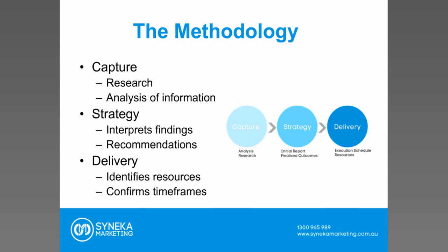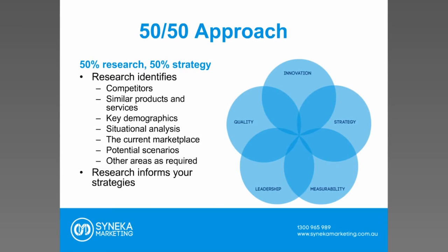Collaboration is particularly important here. A marketing plan will often impact other aspects of an organisation and you need to ensure that timeframes are firstly achievable, and secondly that resources are available if you're working with other departments. We like to consider that our plans follow a 50-50 approach — 50% research and 50% strategy. There is quite a substantial amount of research required to identify marketing outcomes and justify the recommendations we provide.